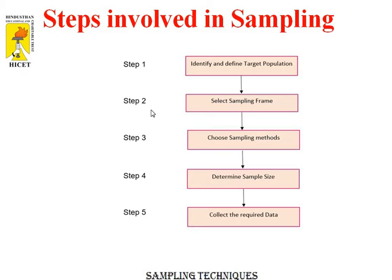Step 2 is select a sampling frame. It is a list of terms or people forming a population from which the sample is taken. The sampling frame would be the list of all people whose names appear on the voter list of a constituency.